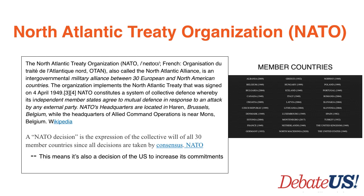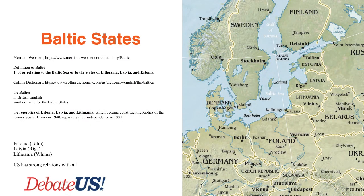A lot of the evidence discussing particular commitments the US could take as part of NATO would involve increased US military activity right on Russia's border. What are the Baltic states? There's really no definitional dispute: they refer to Lithuania, Latvia, and Estonia. You can see them on the map — they became republics after the former Soviet Union fell. These countries had become part of the Soviet Union and gained their independence in 1991. They really do border Russia — Estonia, Latvia, Lithuania — and they also border Belarus.